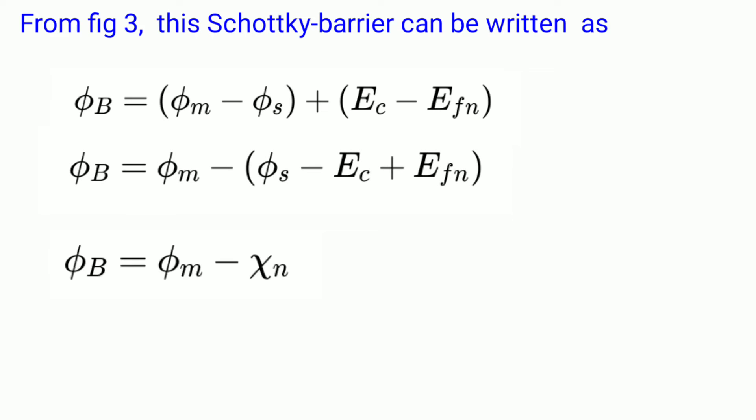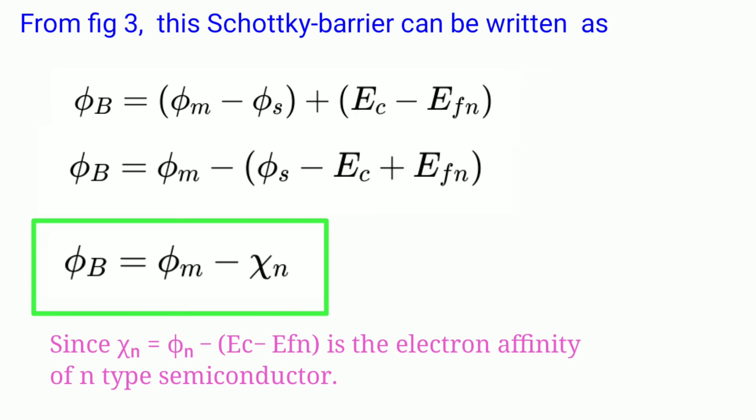This is called Schottky barrier and represented by Phi B. From figure 3, the Schottky barrier Phi B can be written as Phi B equals Phi m minus Phi n plus EC minus EFN, which on further simplification gives Phi B equals Phi m minus Chi n. Here Chi n is the electron affinity of the N-type semiconductor. This is an important relation.